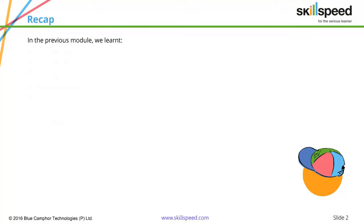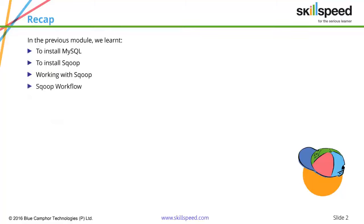In the previous module, we talked about Sqoop and we learned what exactly Sqoop is, the internal architecture of Sqoop, how Sqoop can efficiently export and import data between RDBMS systems and Hadoop. We also saw practical examples of importing data from RDBMS into HBase, HDFS, and Hive using Sqoop.